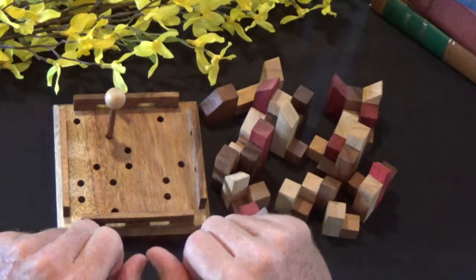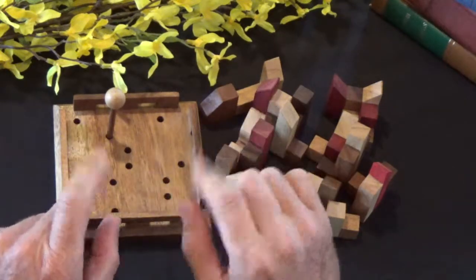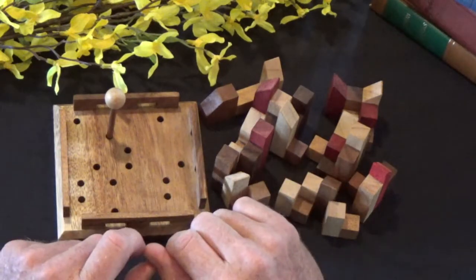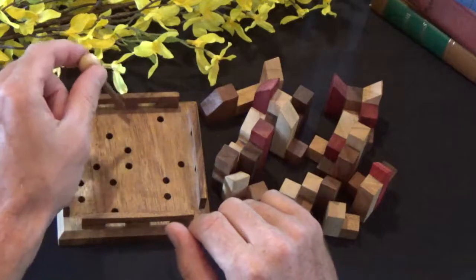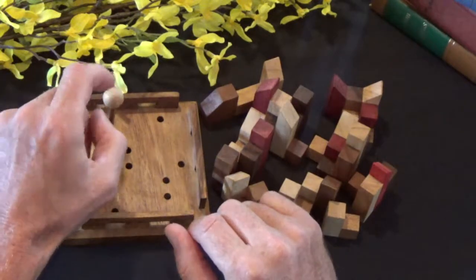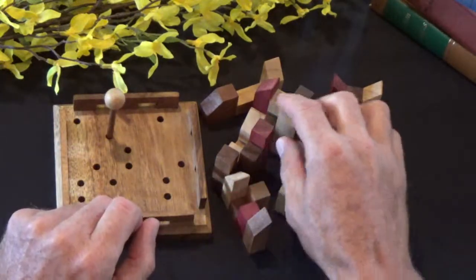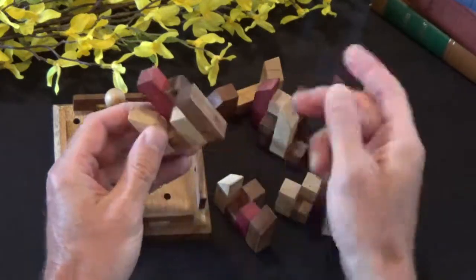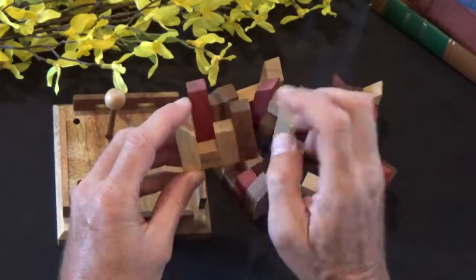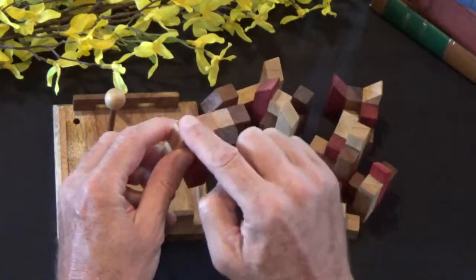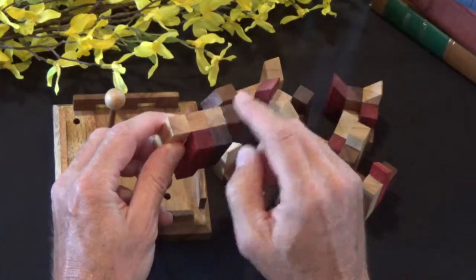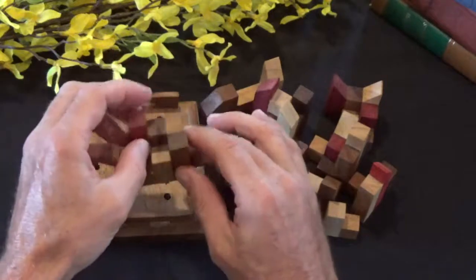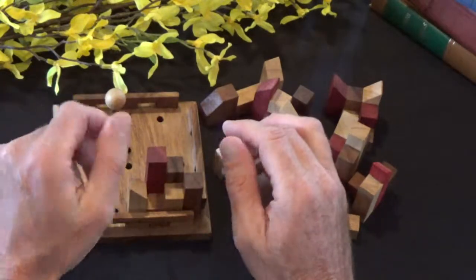Alright, so the solution to, one of the solutions to the City Planner puzzle. So again, I'm gonna place the water tower in this location here. And we'll take a quick look at these pieces. They're all different, like I said. So what you're concerned about really is the base of each of these pieces. That's what's gonna make contact with the base of this city block.